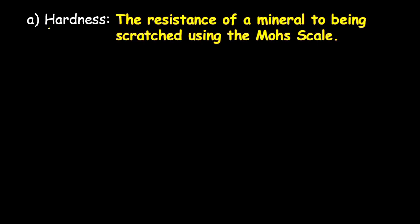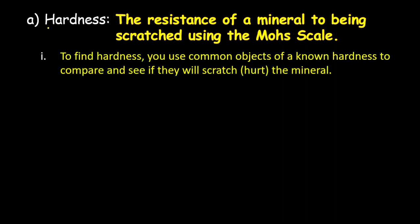The first physical property we can test is hardness. Hardness is described as the resistance of a mineral to being scratched, and we use what is known as the Mohs scale. In order to find the hardness, you use common objects of known hardness to compare and see if they will scratch the mineral.